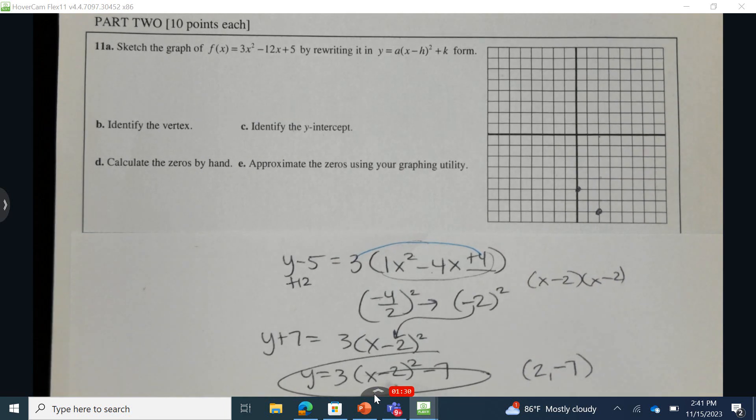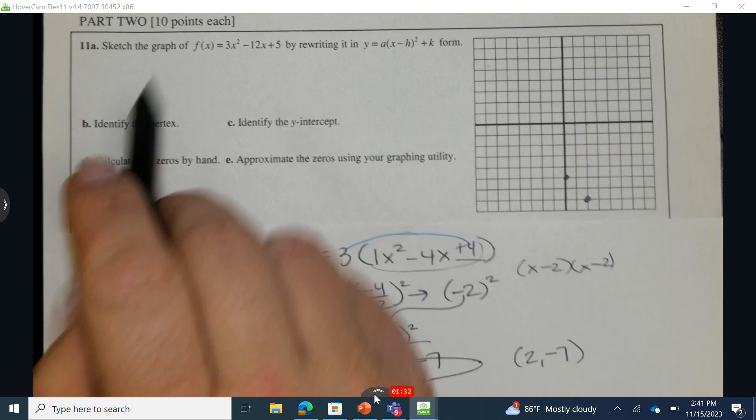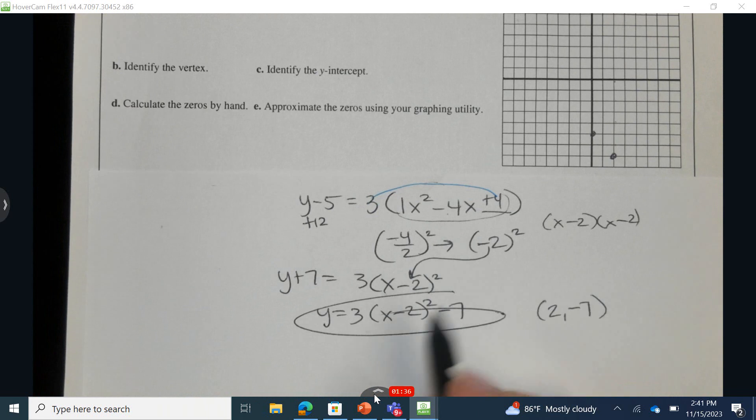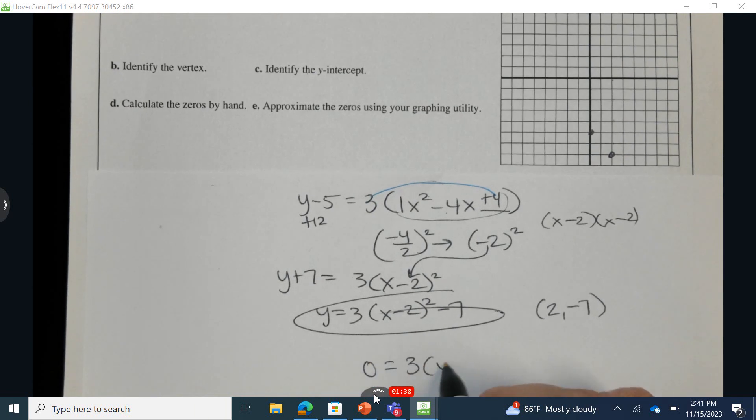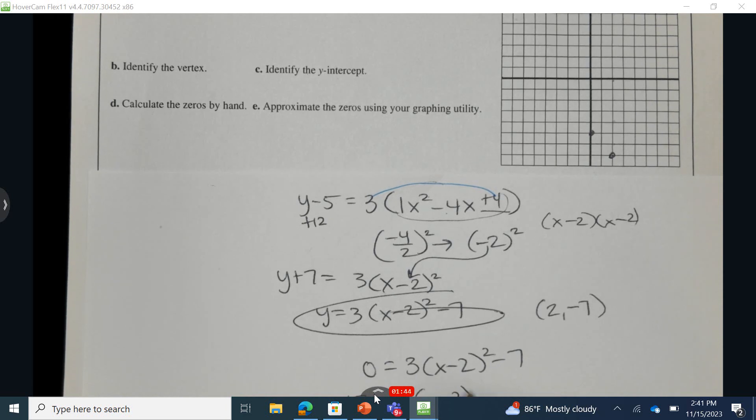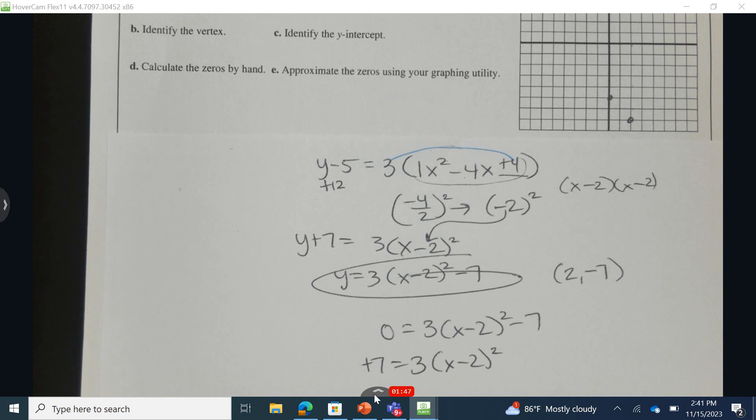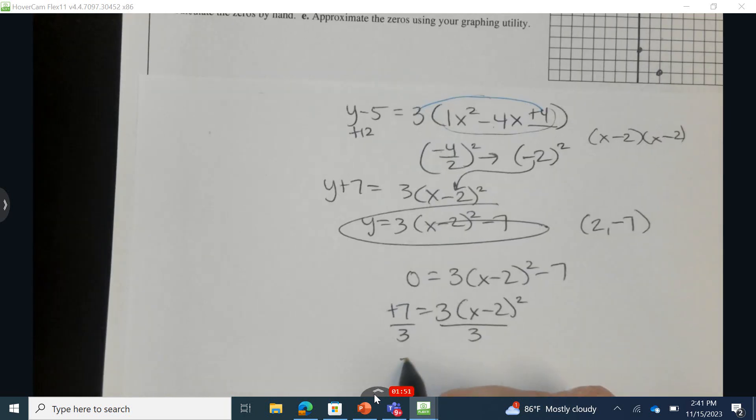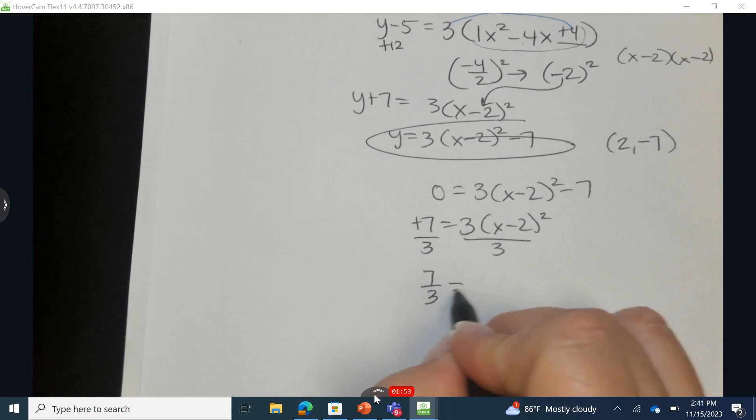Calculate the zeros by hand. I'm going to choose probably just to set this equal to 0, but you could use this exact same form and use the quadratic formula, whatever you're comfortable with. Add 7 to the opposite side. And then I'm going to divide by 3. So 7 thirds equals x minus 2 quantity squared.